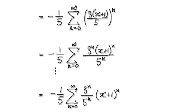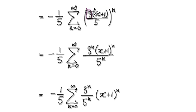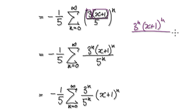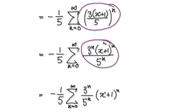And then tidy this up. Remember, a over b to the power of n is the same as a^n over b^n. But then if you look at this, you've got one block multiplying another block, so that's the same as x plus 1 to the power of n over 5 to the power of n. Tidy this thing up and it will then give you this.